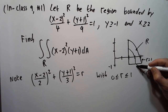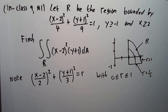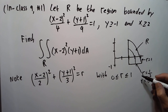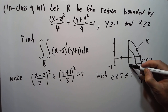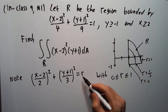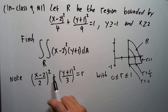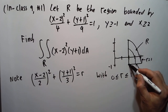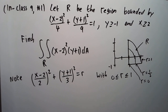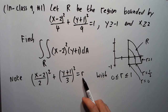If r is zero, you'd be at the center point (2, −1). So any point in this region can be thought of as lying on some ellipse of a certain radius — think of r as like a radius of the ellipse.